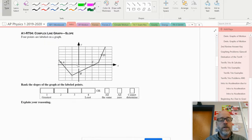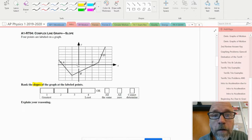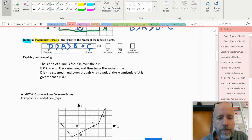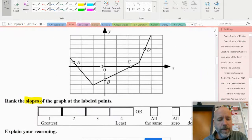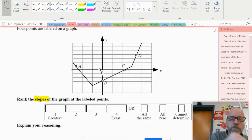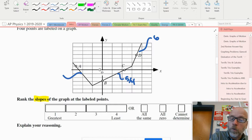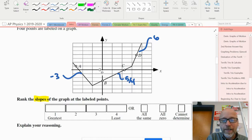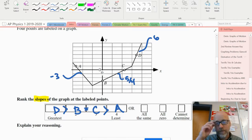The next one says four points are labeled on a graph, rank the slopes of the graphs at the labeled points. Wait, is that the same graph? Did the book mess up? Oh, I see what's different—it's merely asking for the slope, not the magnitude of the slope. We've already calculated what those slopes are, so this should be pretty easy. This slope is six, this was five-fourths, and this slope was negative three. So I would say D is greater than B, which is equal to C, which is greater than A.